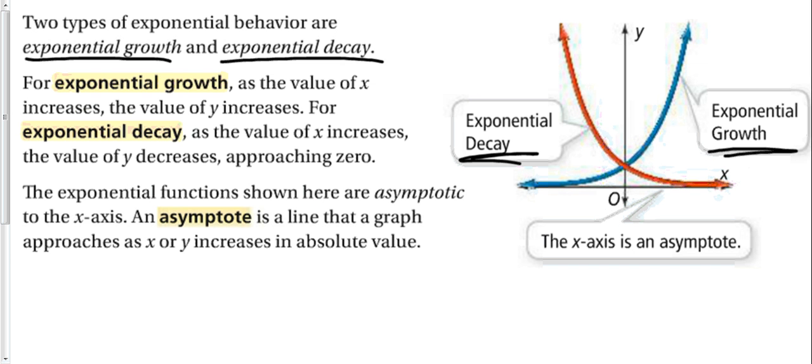For exponential growth, as the value of x increases, the value of y increases. Growth is the blue one. As x goes up, y goes up. That's growth. And the red is decay. So exponential decay, as x increases, y decreases, approaching zero.